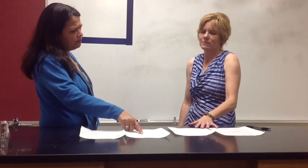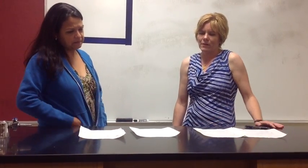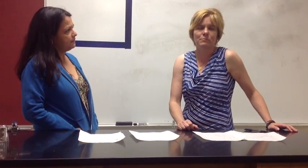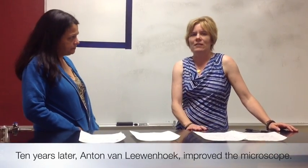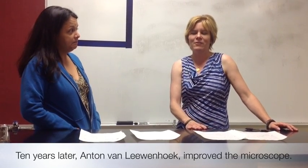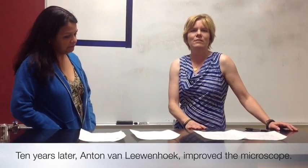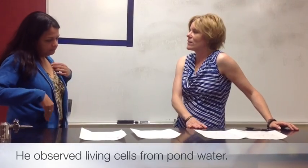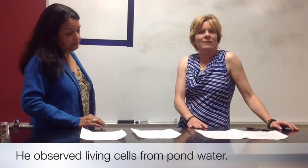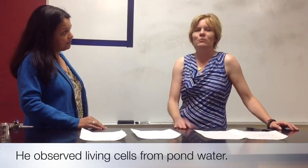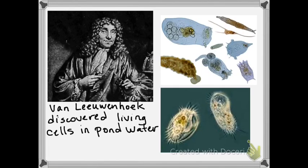Ten years later, microscopes had improved. A Dutchman with a very funny name, van Leeuwenhoek, made a microscope where he could actually see living cells. He was the first to see living cells. He collected pond water from a pond next door and found tiny little animals in it. He didn't even know they were single-celled organisms. Van Leeuwenhoek discovered living cells in pond water.